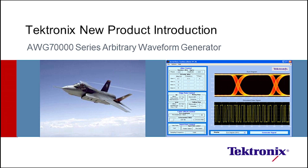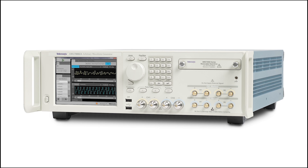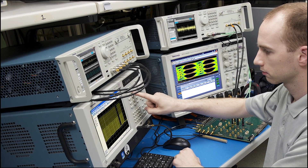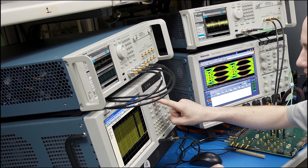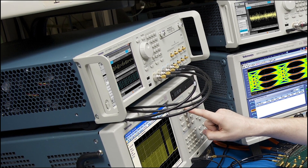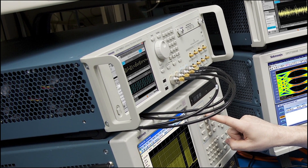Introducing the new AWG 70,000 Series Arbitrary Waveform Generator from Tektronix. The new AWG 70,000 Series has the industry's best combination of high sample rate, long waveform memory, and deep dynamic range to meet cutting-edge design needs for bandwidth efficiency, modulation complexity, and new RF technology implementation in several applications.